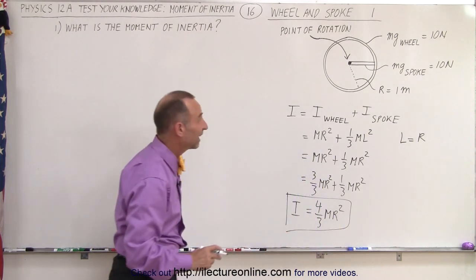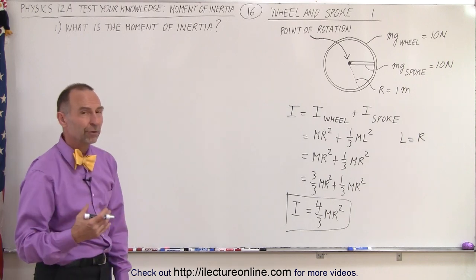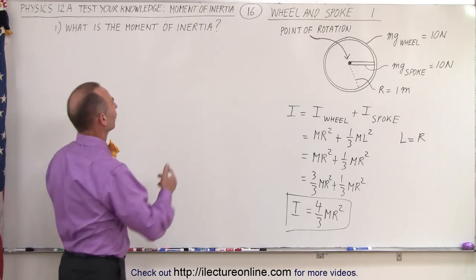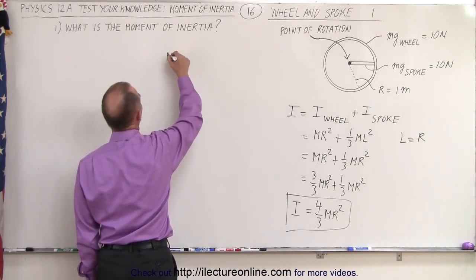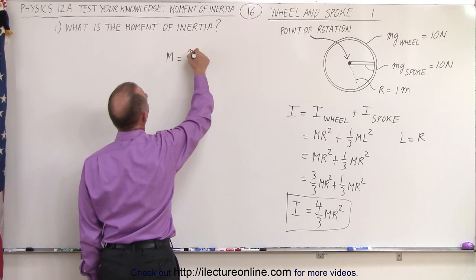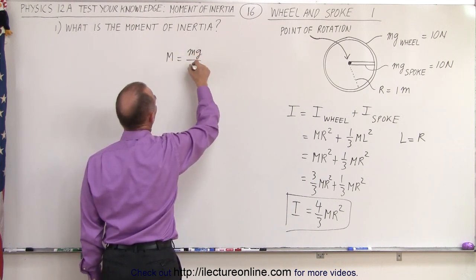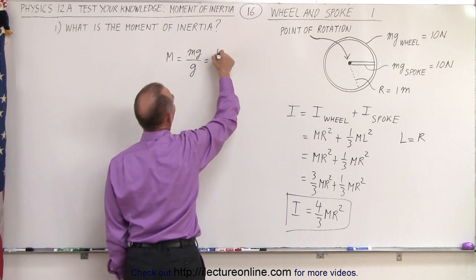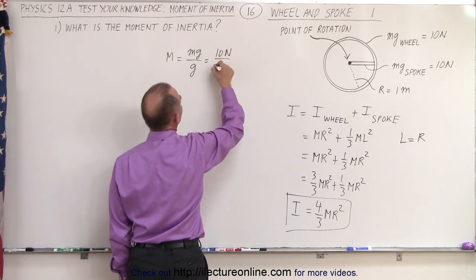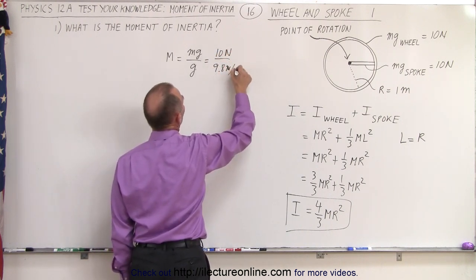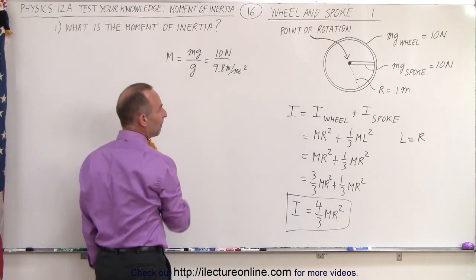Since we're given the weight and the radius, we should be able to find a numerical value. The mass m is equal to the weight mg divided by g. So that would be 10 newtons divided by 9.8 meters per second squared. And r is 1.